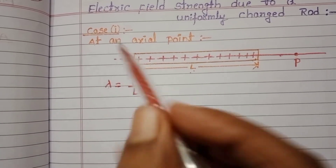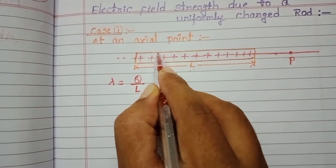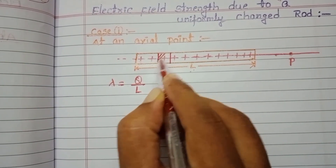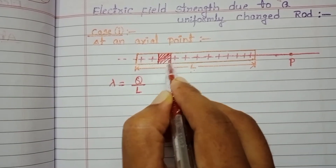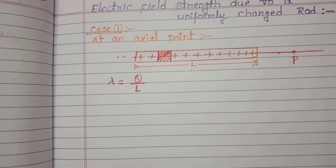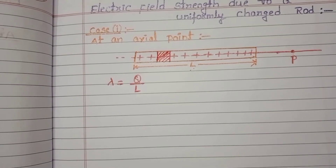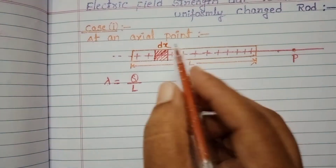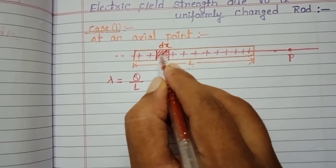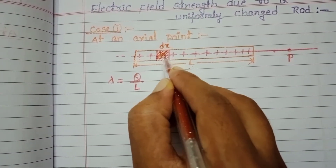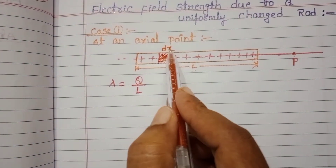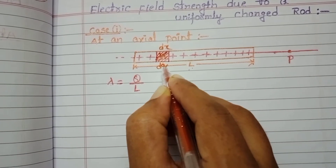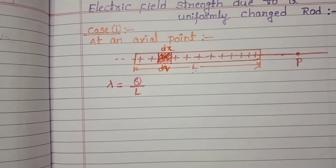So instead, let us consider a smallest element on this rod — a very small element. The length of this smallest element is DX, and the charge on this element is DQ. Since DX is very very small, the charge DQ on this element is also very very small, so it behaves like a point charge.